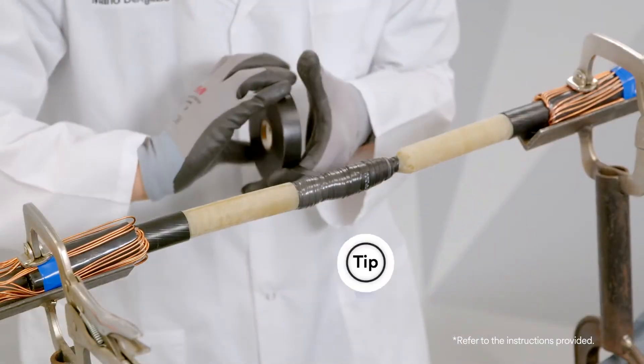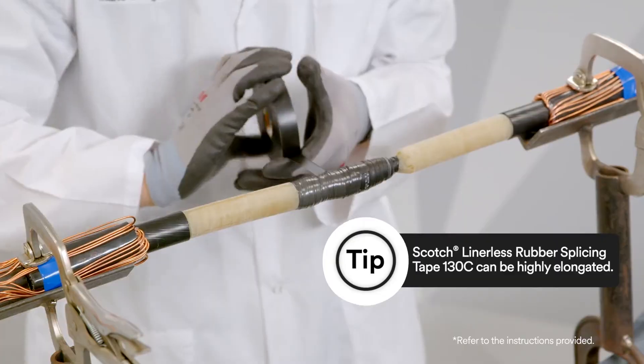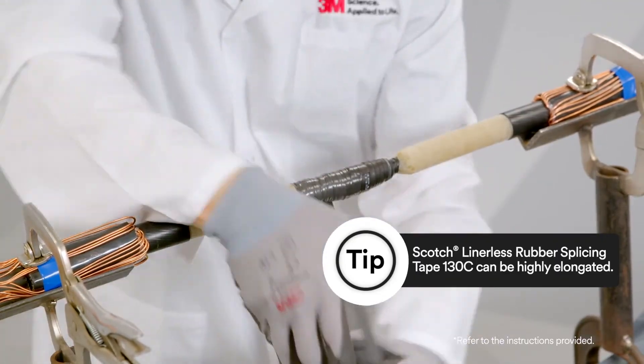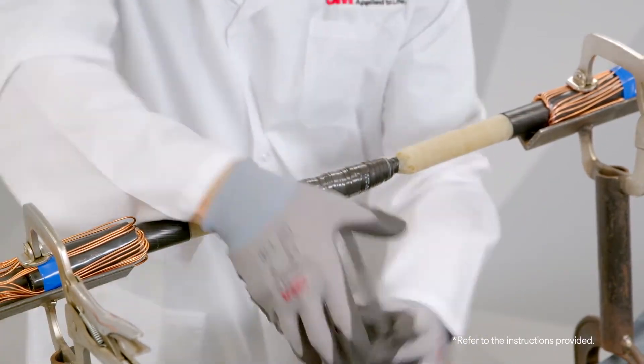Make sure you apply enough Scotch Linerless Rubber Splicing Tape 130C to build up the thickness to one to one and a half times the original insulation thickness.